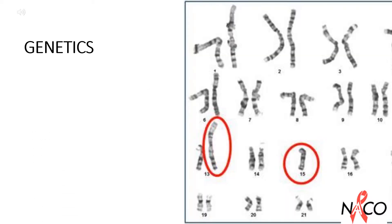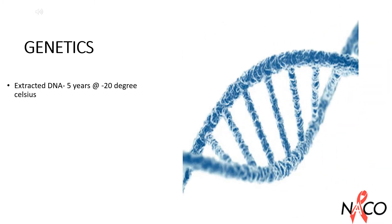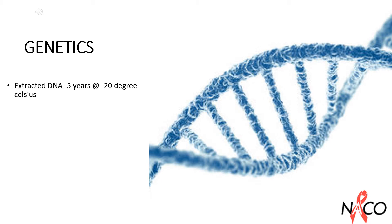Section Genetics: Blood samples for karyotyping should be kept at 2 to 8 degrees Celsius for 6 days. Extracted DNA should be kept at minus 20 degrees Celsius for 5 years. Extracted RNA should be kept at minus 70 degrees Celsius for 5 years.